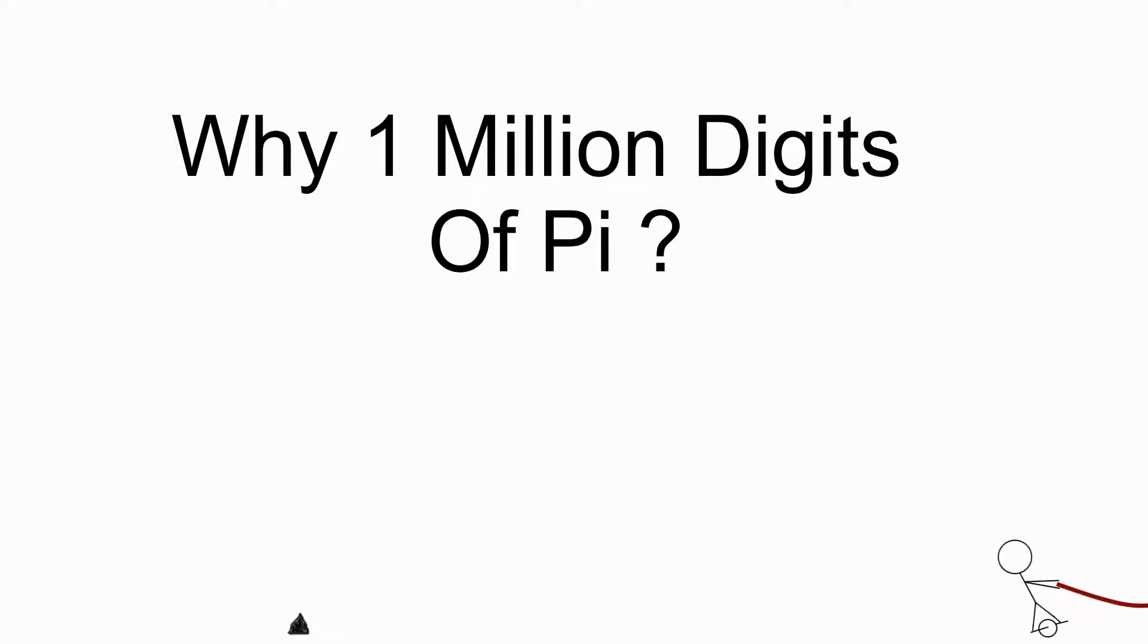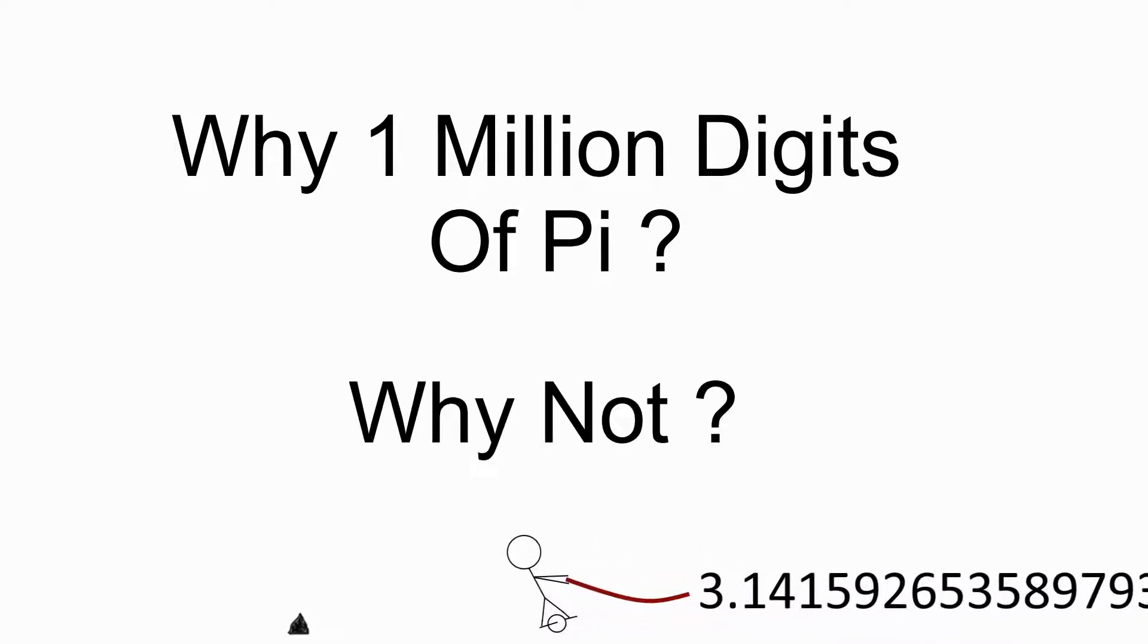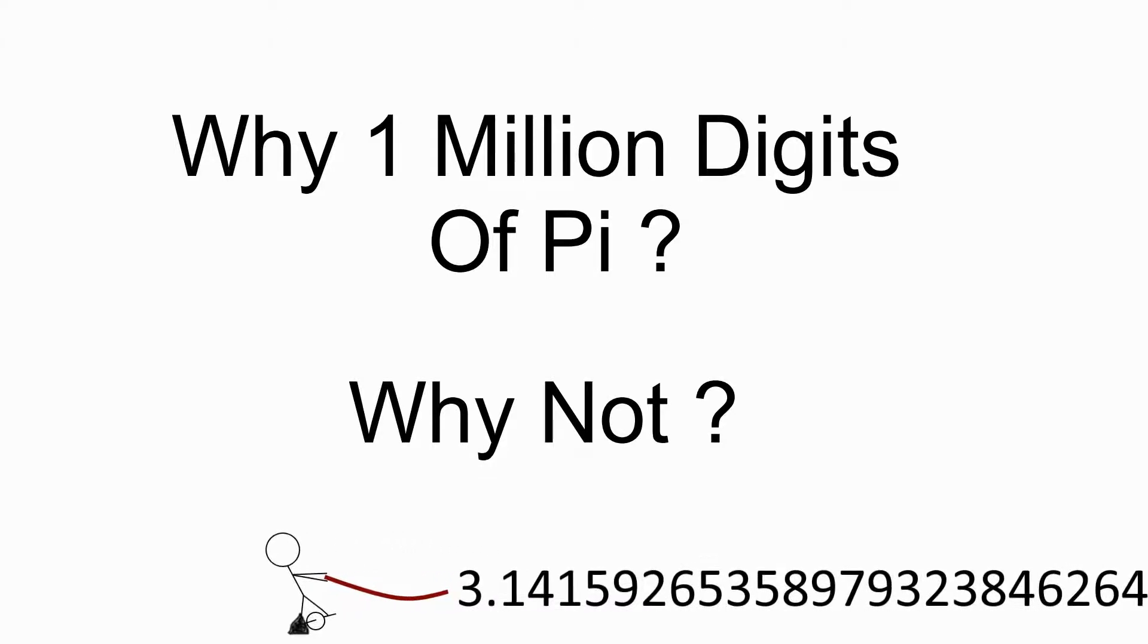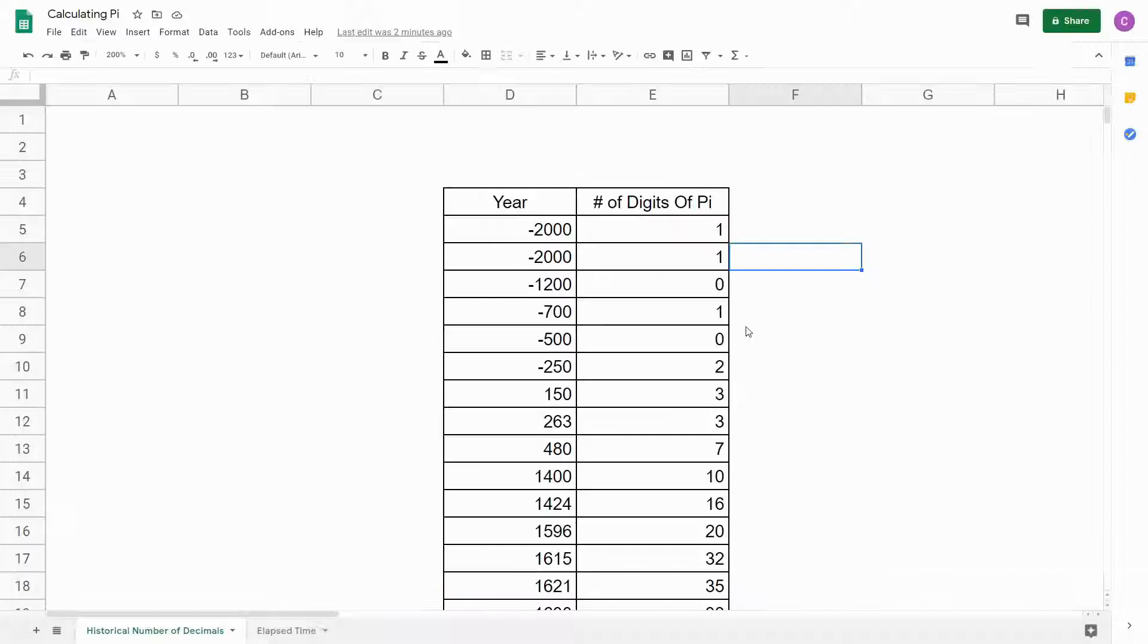Alright, welcome. So today we're going to calculate pi to 1 million decimal places. Why? Well, we're not doing it because it's hard, and we're not doing it because it is impressive. We're doing it because it sounds like it's hard and it sounds like it's impressive, but it really isn't, at least not anymore. So to figure out why, let's go over a bit of history.